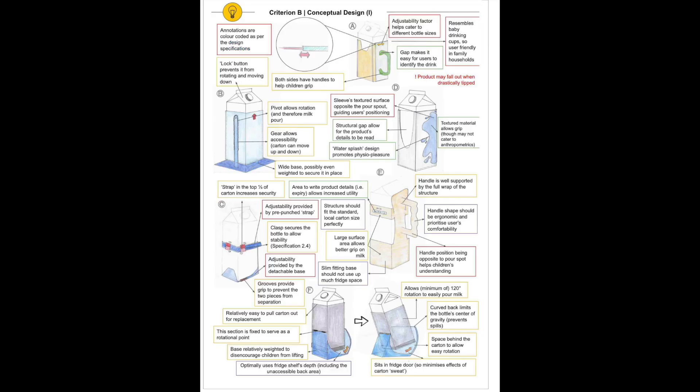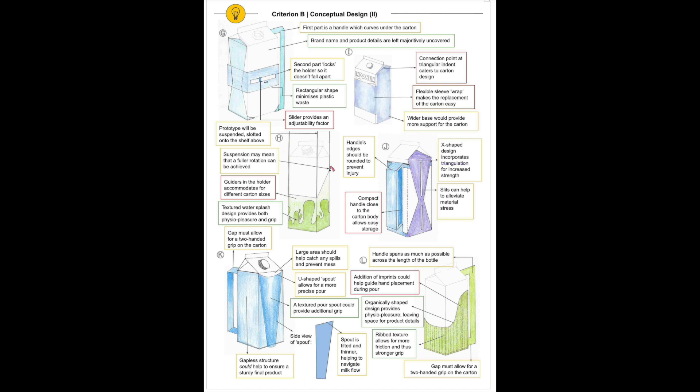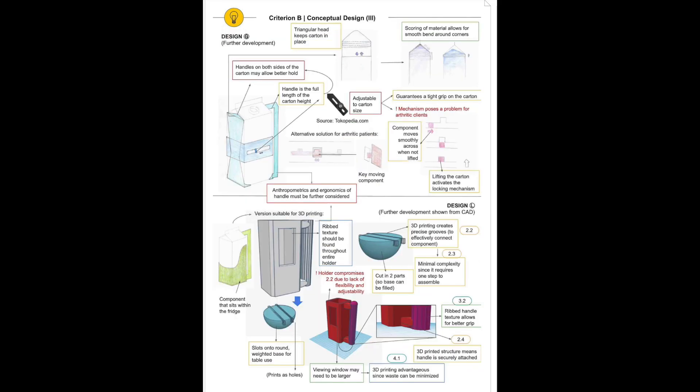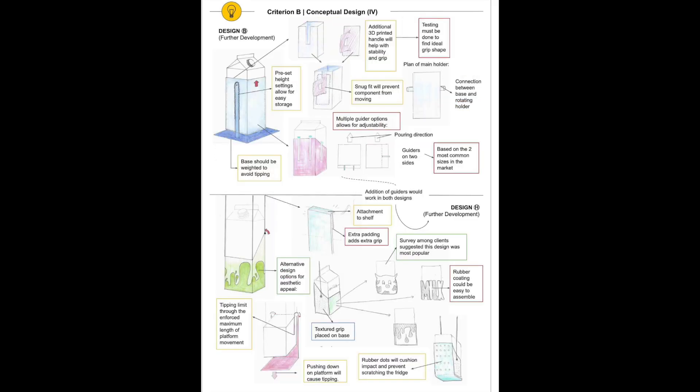This is an example of a student who has a median performance on this section of the IA. You can see that they're referencing the design specifications — that's what the colored boxes around the annotations mean. They are also iterating and have lots of ideas, and they have some CAD drawings as well as hand-drawn work. However, there's little evidence of any user feedback involved, and also little evidence about whether the designs meet the specifications or not.